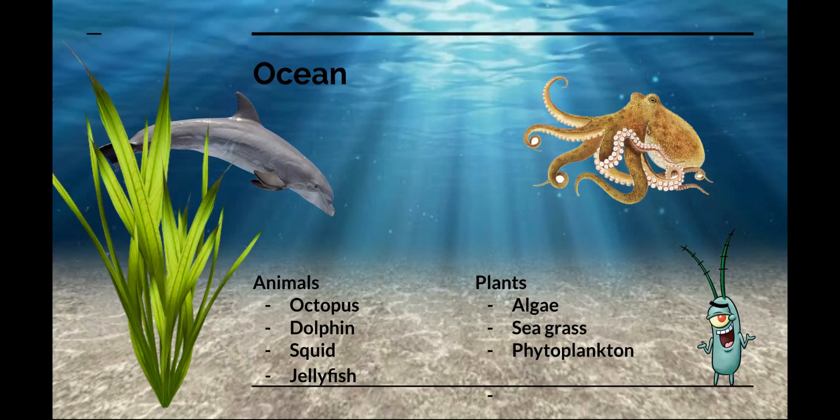Some of the smallest animals on Earth can also be found in the ocean, like plankton, which are so small you can only see them with a microscope. But big fish, like great white sharks, also swim in these waters.